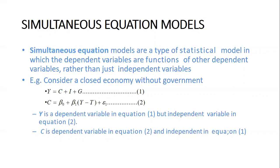What this definition is trying to say is that when we have a given set of equations, and the dependent variable happens to be an independent variable in a different equation, and at the same time it also happens to be a dependent variable. Let's look at this example. We should consider a closed economy without government intervention. For a closed economy, we don't have anything like net exports, so we have Y equal to C plus I plus G. The second equation has C.